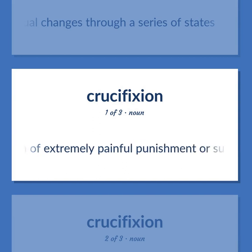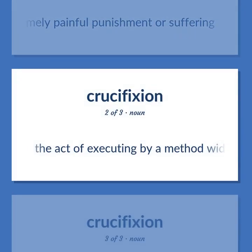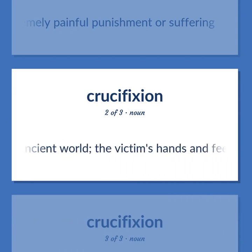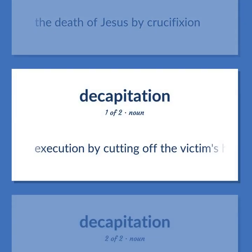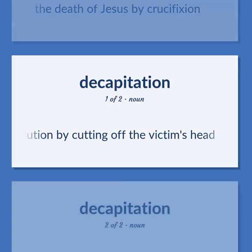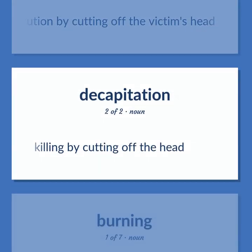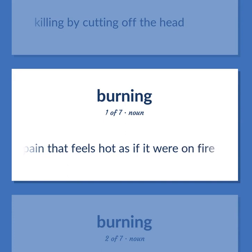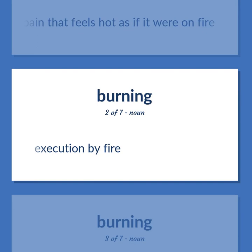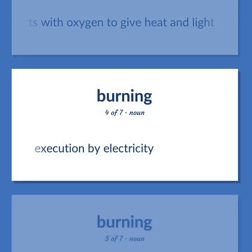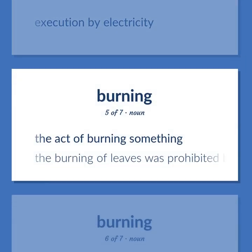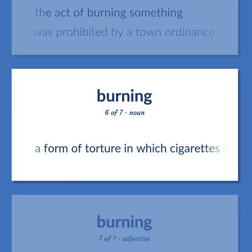The infliction of extremely painful punishment or suffering. Crucifixion: The act of executing by a method widespread in the ancient world — the victim's hands and feet are bound or nailed to a cross. The death of Jesus by crucifixion. Decapitation: Execution by cutting off the victim's head; killing by cutting off the head. Burning: Pain that feels hot as if it were on fire. Execution by fire. A process in which a substance reacts with oxygen to give heat and light. The act of burning something — the burning of leaves was prohibited by a town ordinance. A form of torture in which cigarettes, cigars, or other hot implements are used to burn the victim's skin. Of immediate import — burning issues of the day.